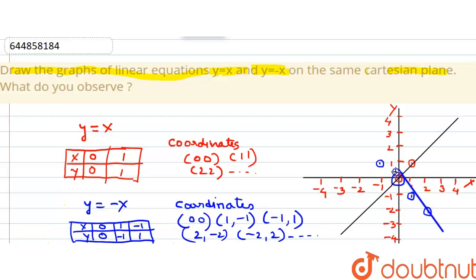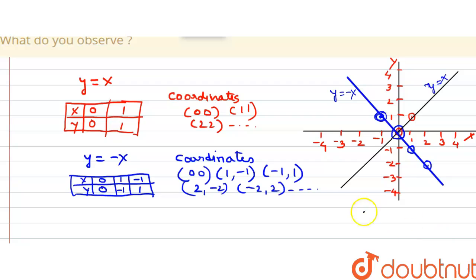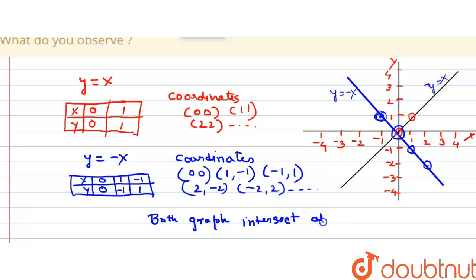Drawing the graph through these coordinates, it passes through the origin. This graph is for y equals x and this graph is for y equals minus x. We can observe that these two graphs intersect at the origin. So the observation is that both graphs of these two linear equations intersect at the origin, which is the solution of this system of equations.